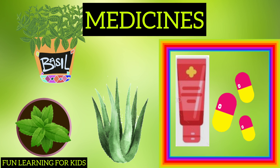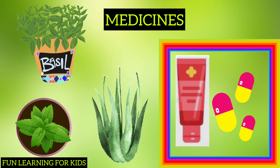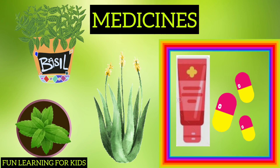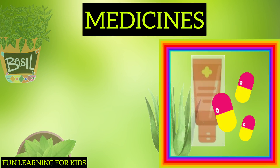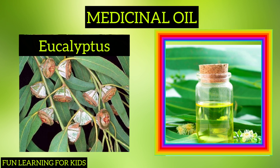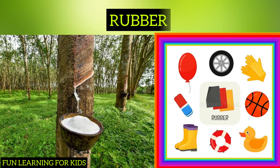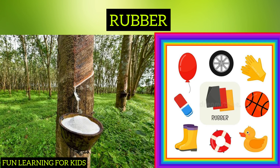Some plants like aloe vera, mint, and tulsi are used to make medicines. Eucalyptus oil from the eucalyptus tree is a great cold and pain reliever. We get rubber from rubber trees, and all the rubber products that you see are also from plants. Isn't it amazing?